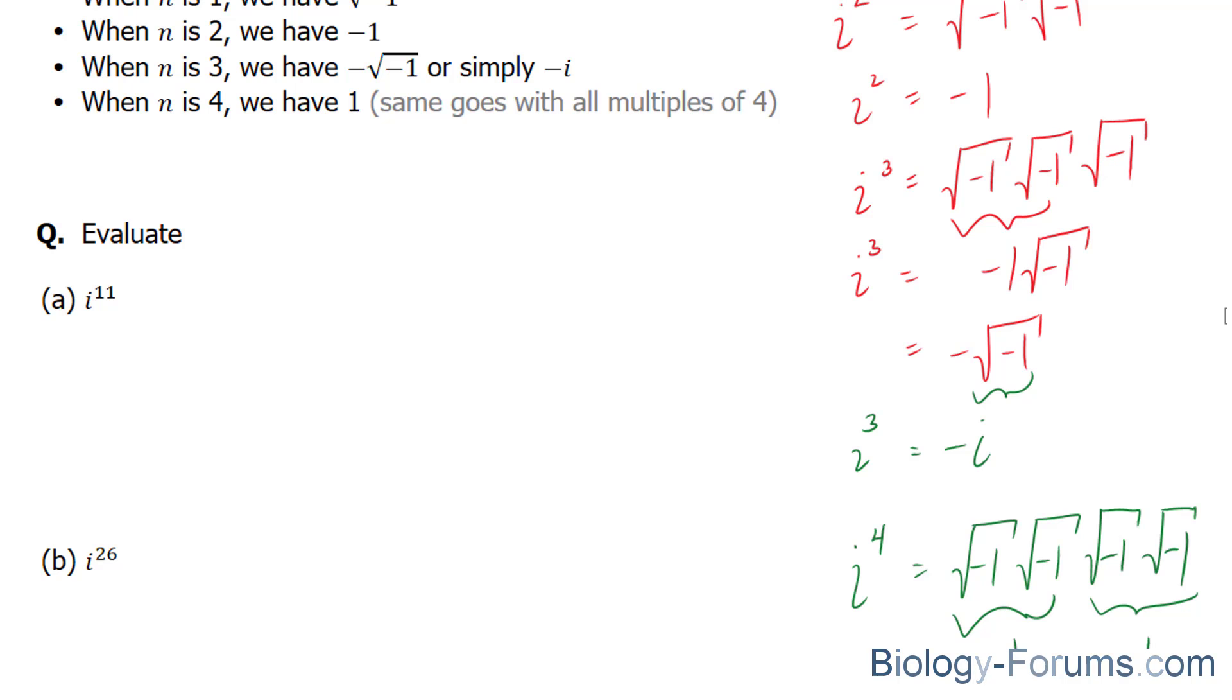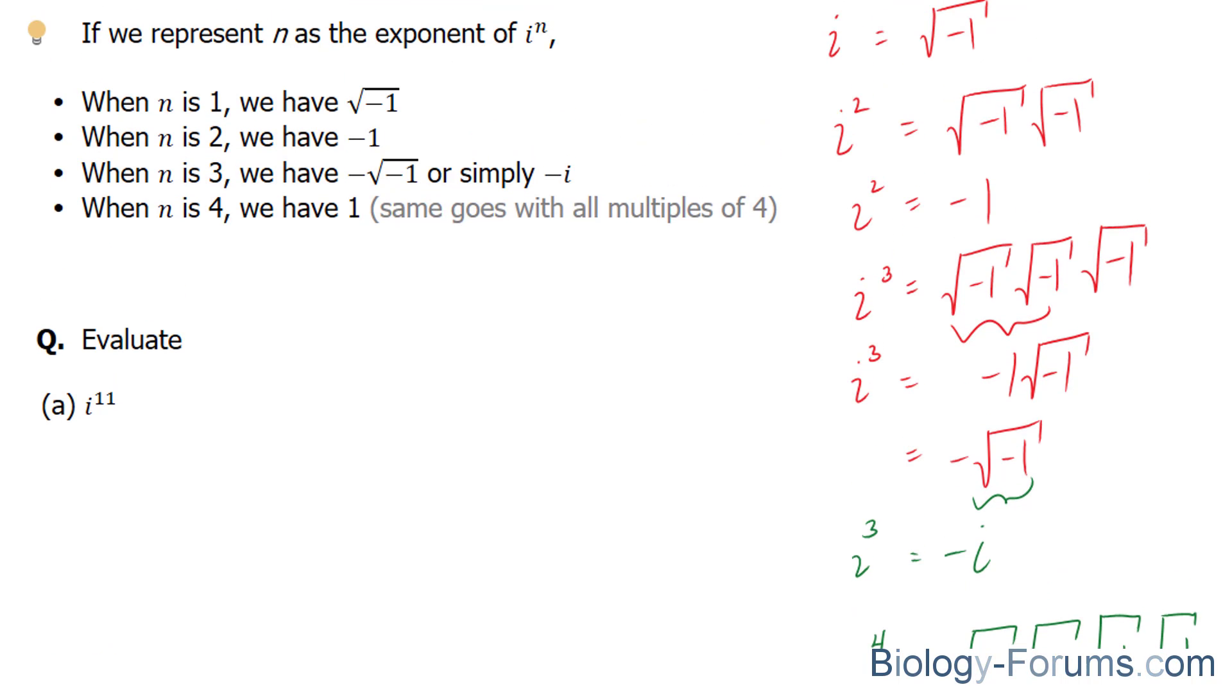i to the power of 11. Now, notice that these set of rules don't extend to an n of 11. So, what we have to do is break this i to the power of 11 down using our algebraic rules and figure out what this will reduce to. So, I can break down i to the power of 11 into i to the power of 8 and i to the power of 3.